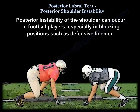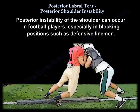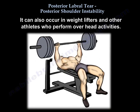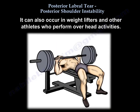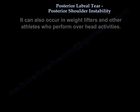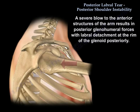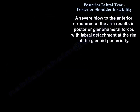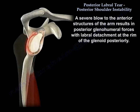Posterior instability of the shoulder can occur in football players, especially in blocking positions such as defensive linemen. It can also occur in weightlifters and other athletes who perform overhead activities. A severe blow to the anterior structures of the arm results in posterior glenohumeral forces with labral detachment at the rim of the glenoid posteriorly.